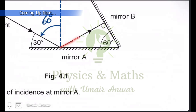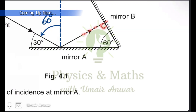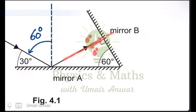The light reflected from the surface strikes mirror B at an angle of 90 degrees with the surface of mirror B. When we draw a normal, it is perpendicular to the surface, so the angle between the ray and the normal is zero degrees. When the ray reaches mirror B with an angle of incidence of zero degrees, according to the laws of reflection, it is reflected back on the same path, with the angle of reflection also equal to zero degrees.